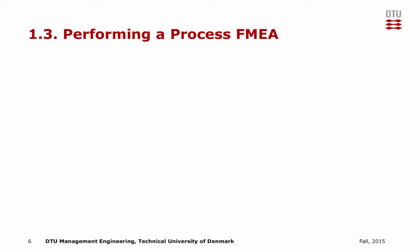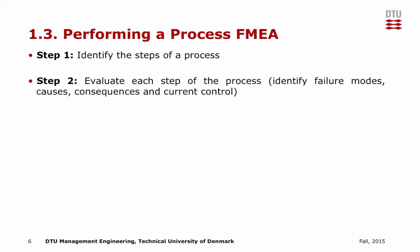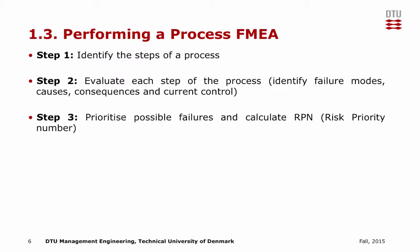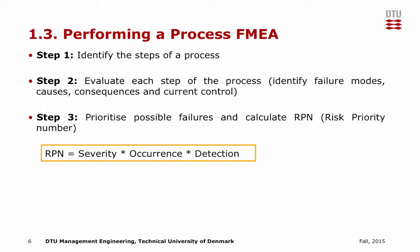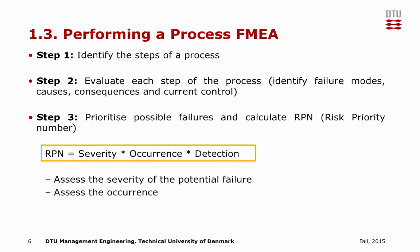Performing a process FMEA can be divided into five steps. Step 1: each step in the process is identified. Step 2: these steps are evaluated based on failure mode, causes, consequences, and current controls. Step 3: the possible failures are prioritized and the Risk Priority Number, also known as RPN, is calculated. The RPN is based on three factors: severity, occurrence, and detection — that is, how severe the problem is, how frequently the failure occurs, and how easy the failure is to detect.